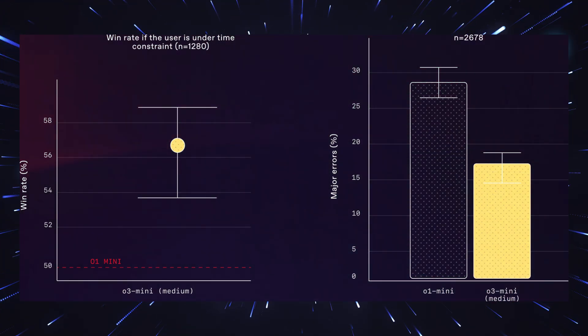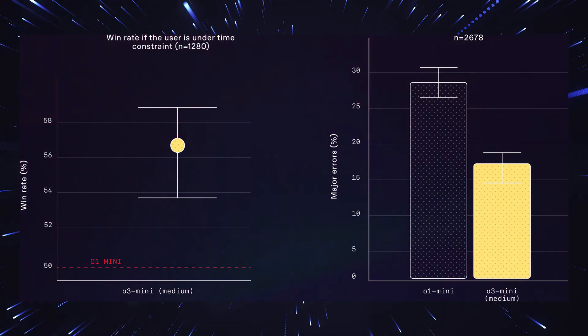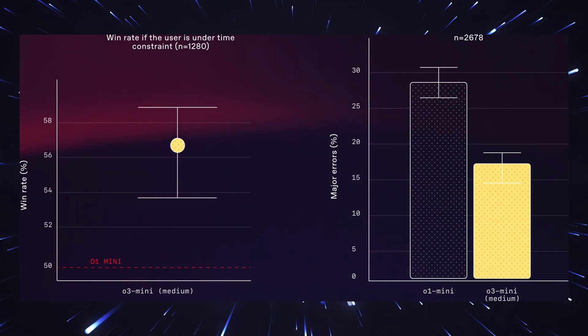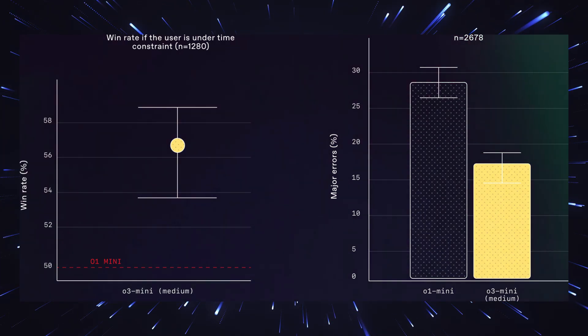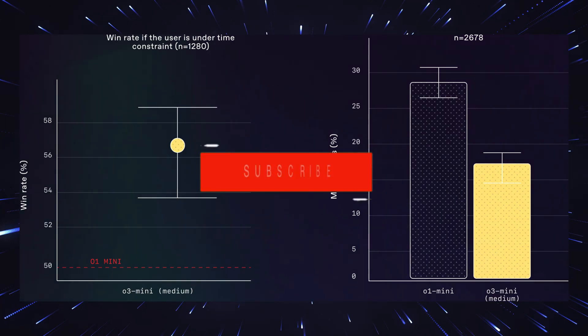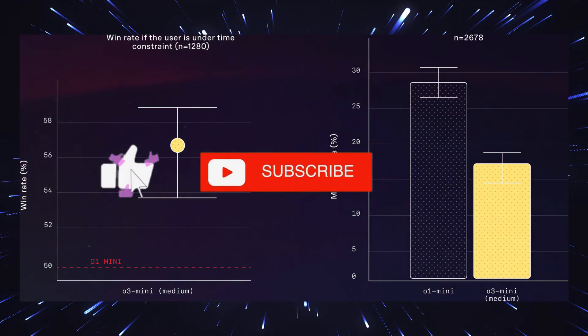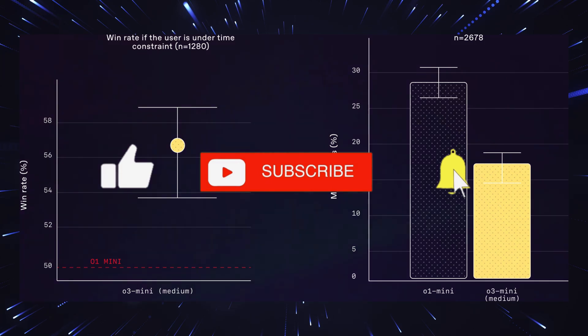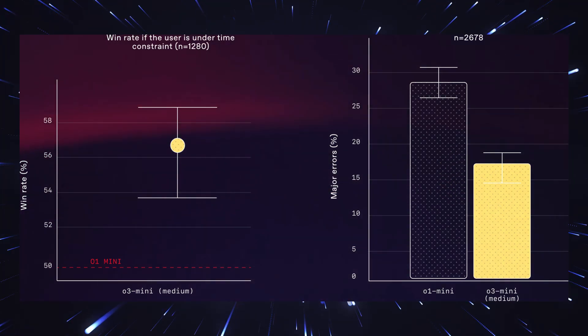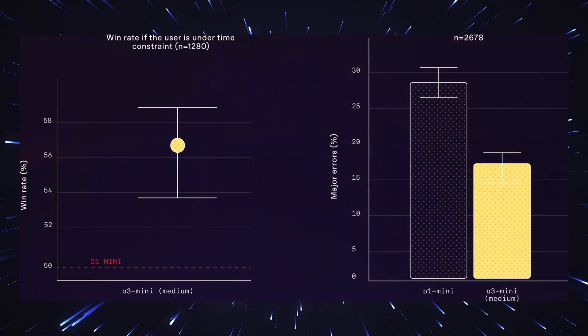A fascinating aspect is also the model's ability to answer complex scientific questions at PhD level. Here, O3 Mini achieves values that are only slightly below those of O1, which is remarkable, considering it's the Mini version. Particularly interesting is also the model's ability to work with Python libraries like PyTorch and use them for complex machine learning tasks. This shows that O3 Mini has a deep understanding of machine learning concepts and is capable of implementing them practically.